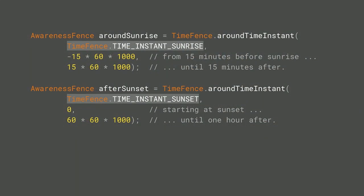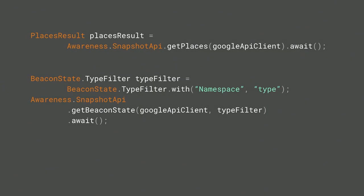Since last year, we've added some great new contexts to make the Awareness API even more powerful. In particular, we've added semantic time context conditions to our time fence, including parts of day, weekends and holidays, and now also solar times — that is, sunrise and sunset — localized to your current location. Awareness takes care of updating the actual values as the device moves to different locations. Our Snapshot API gives you very quick access to a fresh sample of all the signals we offer, like places, weather, and beacon states.